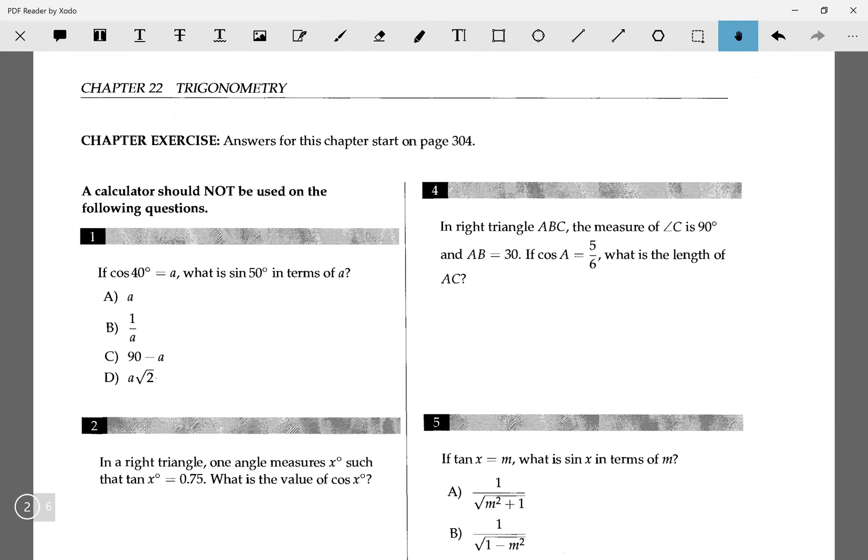So I want to do number one. If cosine 40 equals a, what is sine 50 in terms of a? So right off the bat, I know that 40 plus 50 equals 90. And since they equal 90, that means I know sine of 50 is going to be equal to cosine 40, which means that sine 50 equals a.